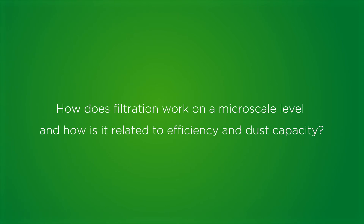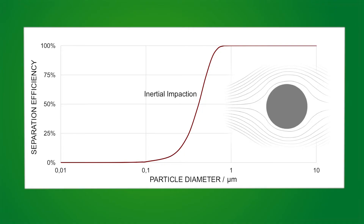How does filtration work on a microscale level, and how is it related to efficiency and dust capacity? Basically, there are six filtration mechanisms. I'm going to explain four of them on a single fiber model. These four are the most important for HVAC filtration and are happening actually in the media.